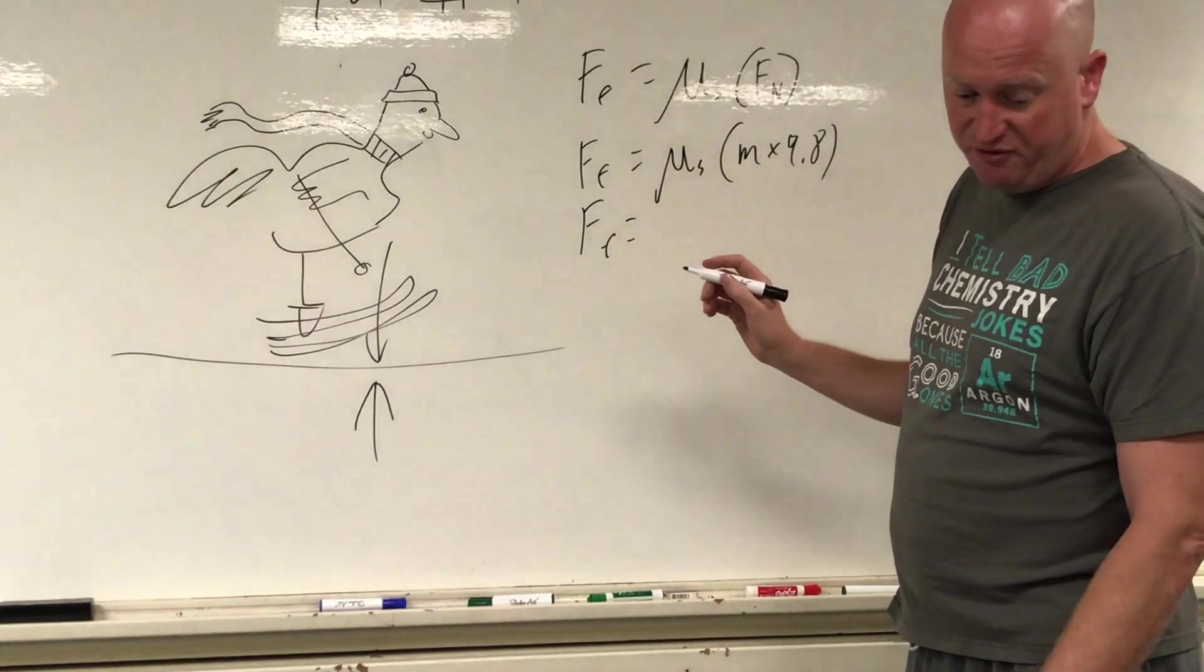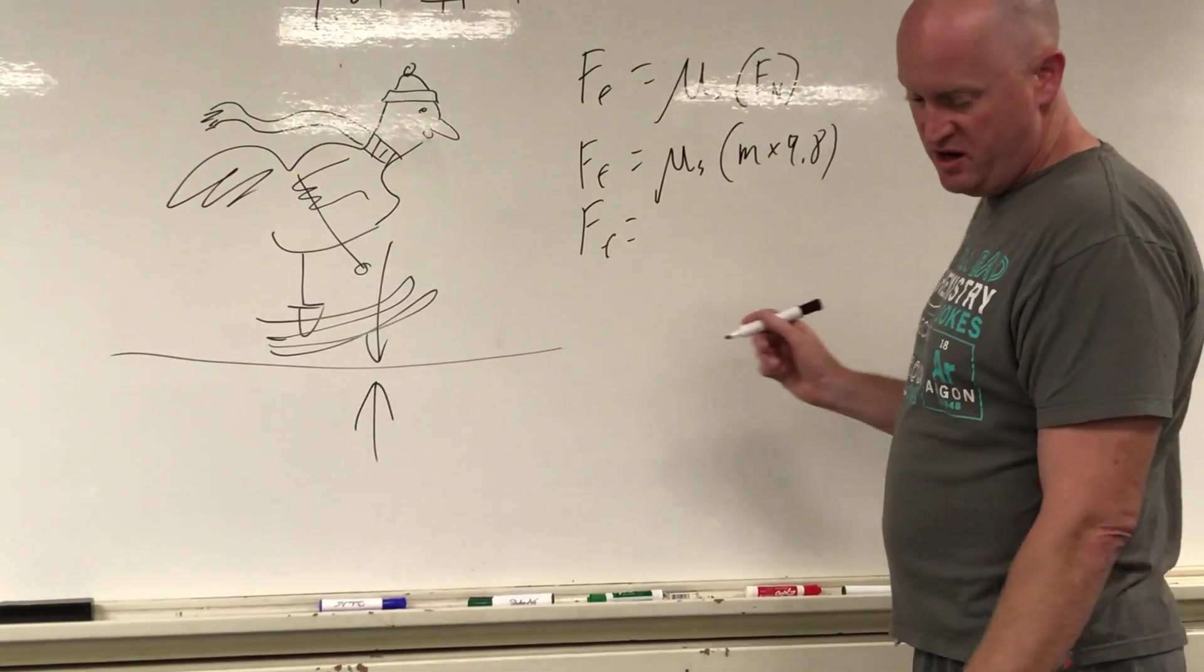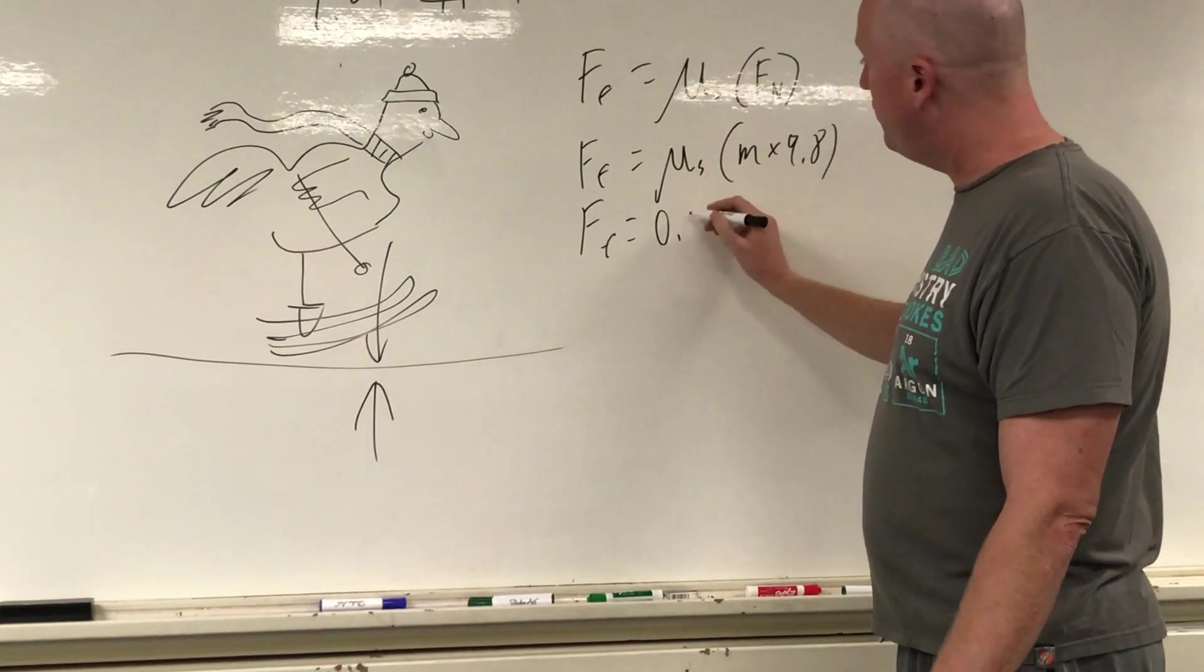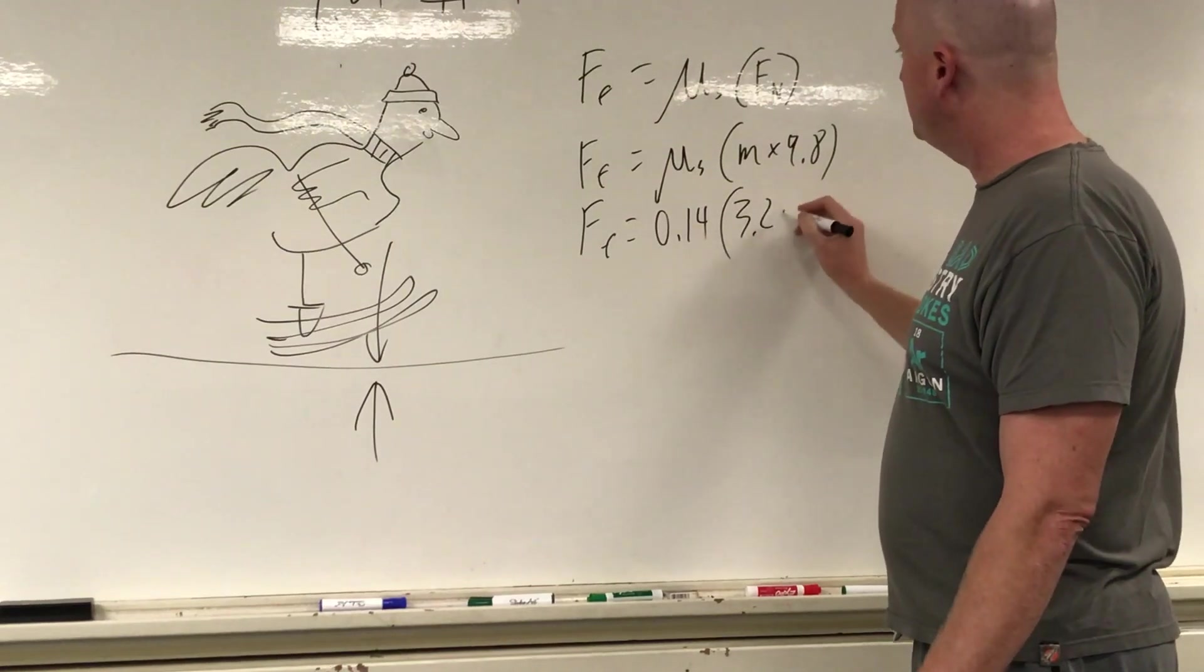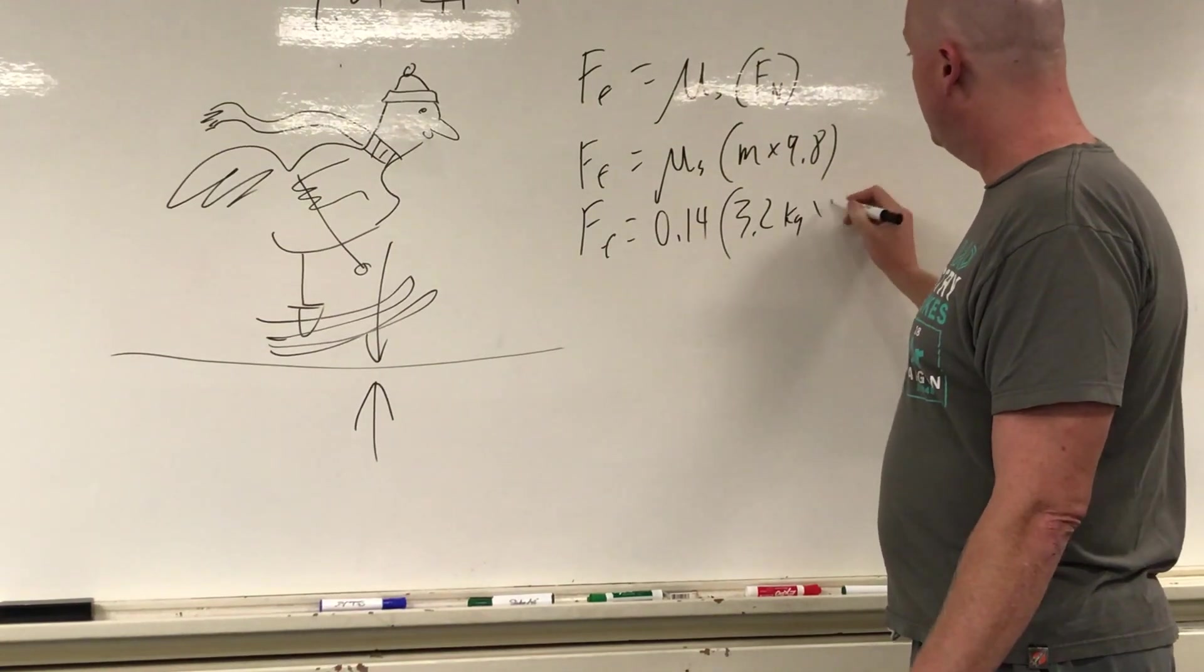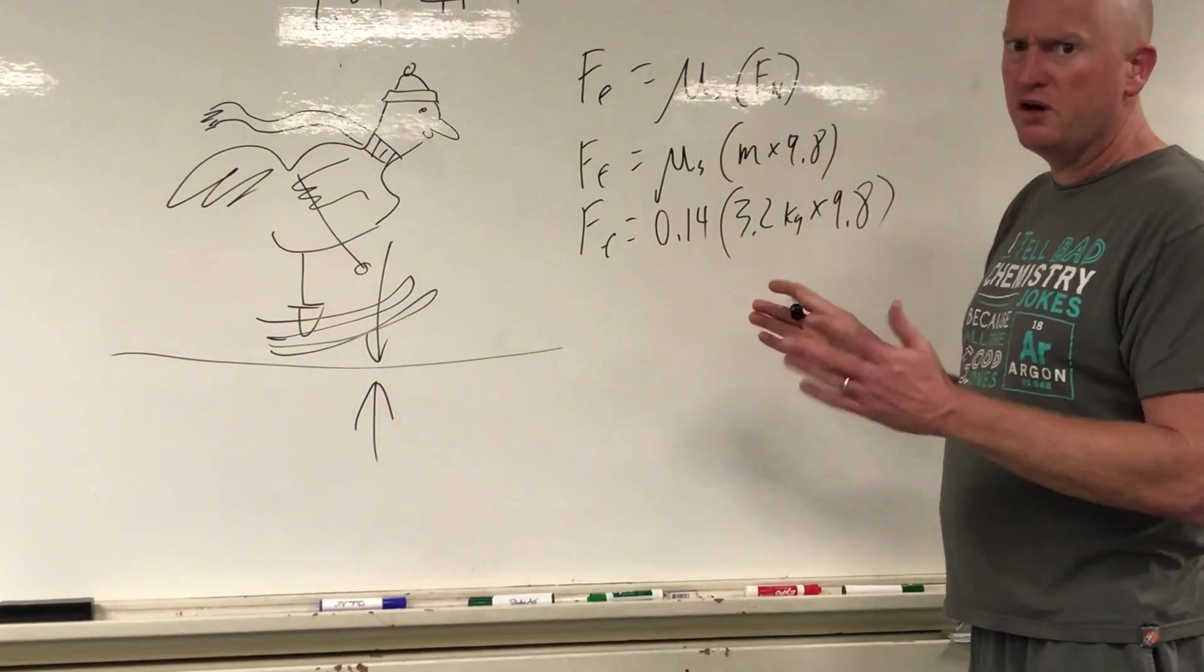Now I found out the static friction of waxed wood on wet snow is 0.14, and the mass of my chicken is 3.2 kg times 9.8 earthlings. Come on, where else do you find skiing like the skiing you got on earth?